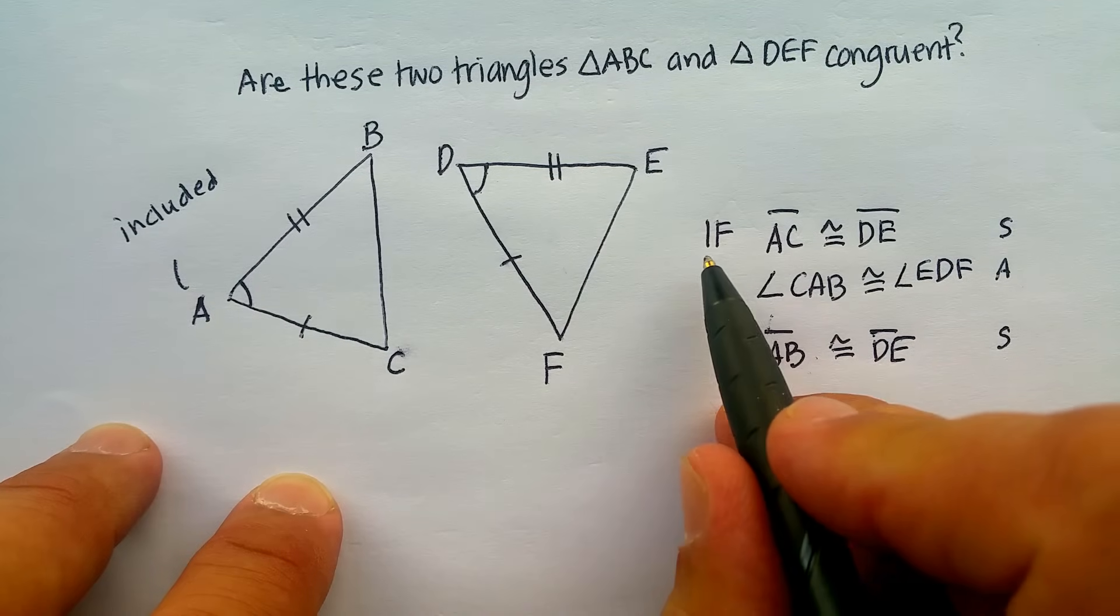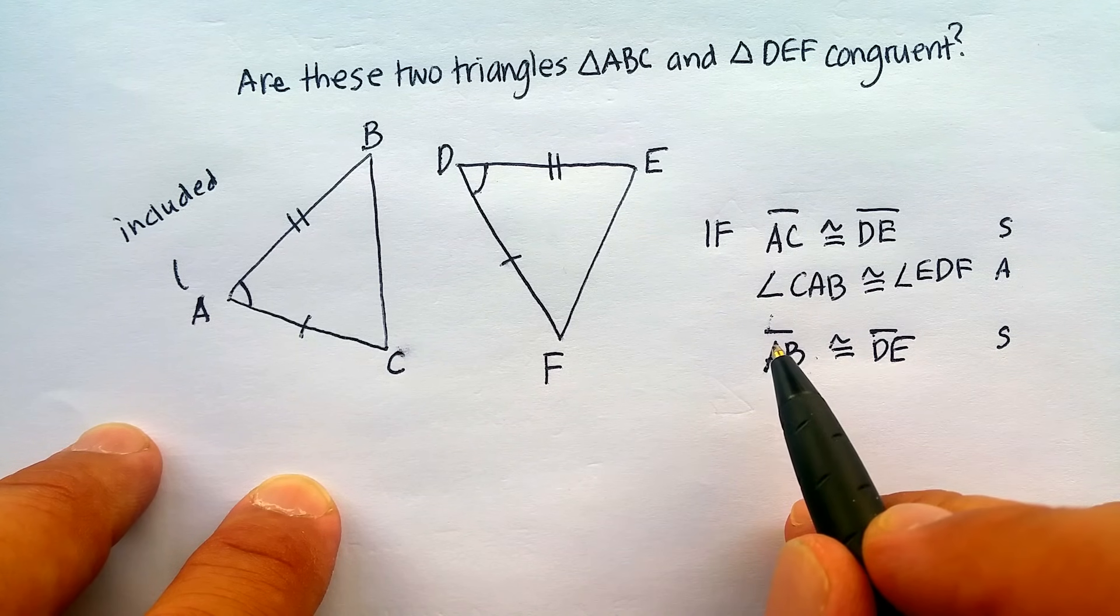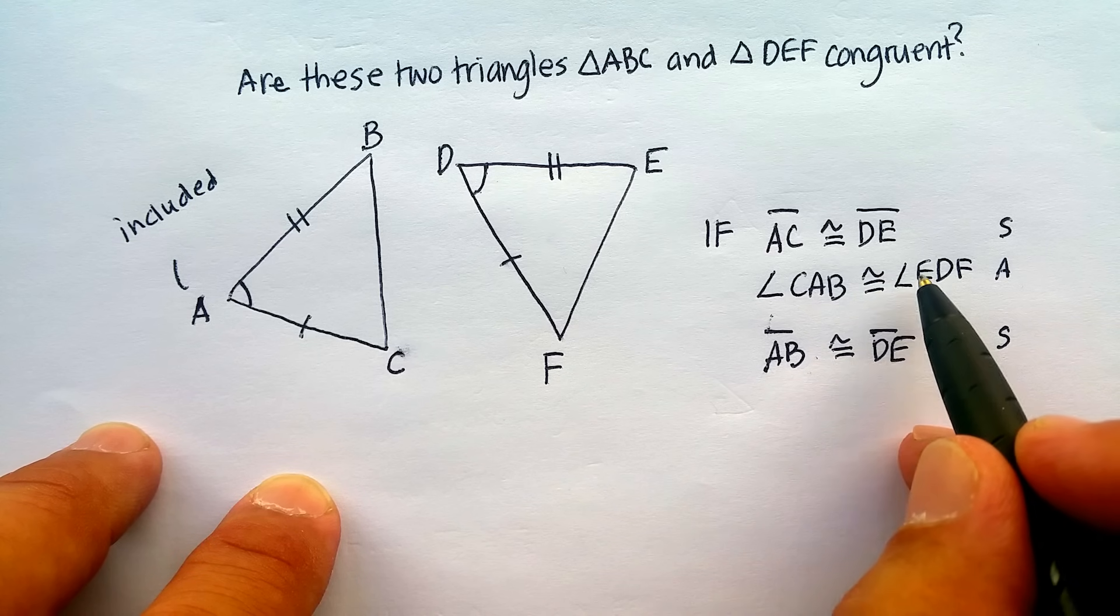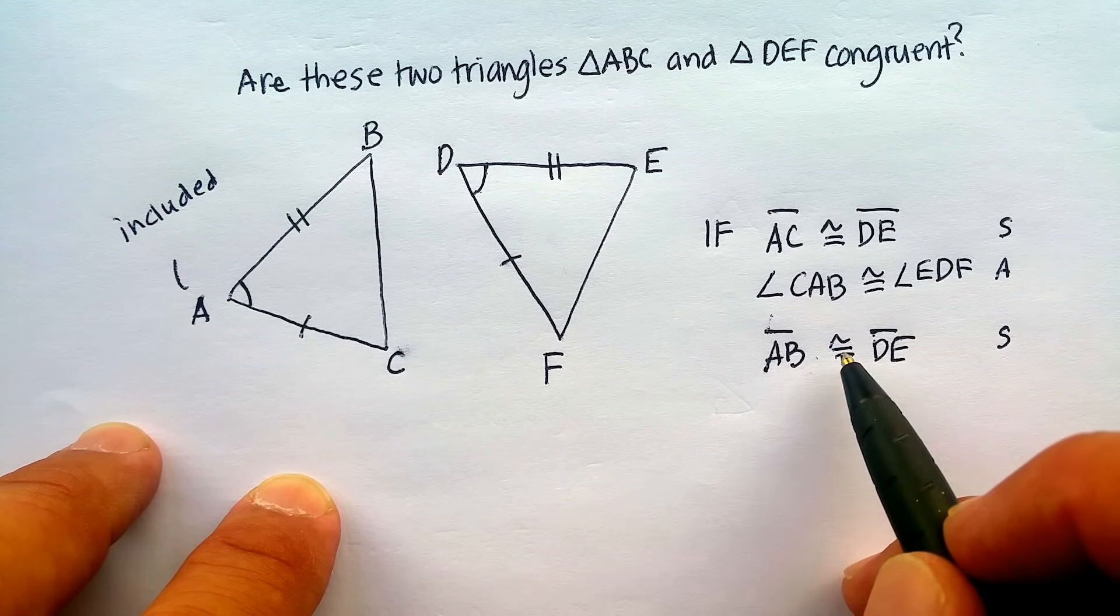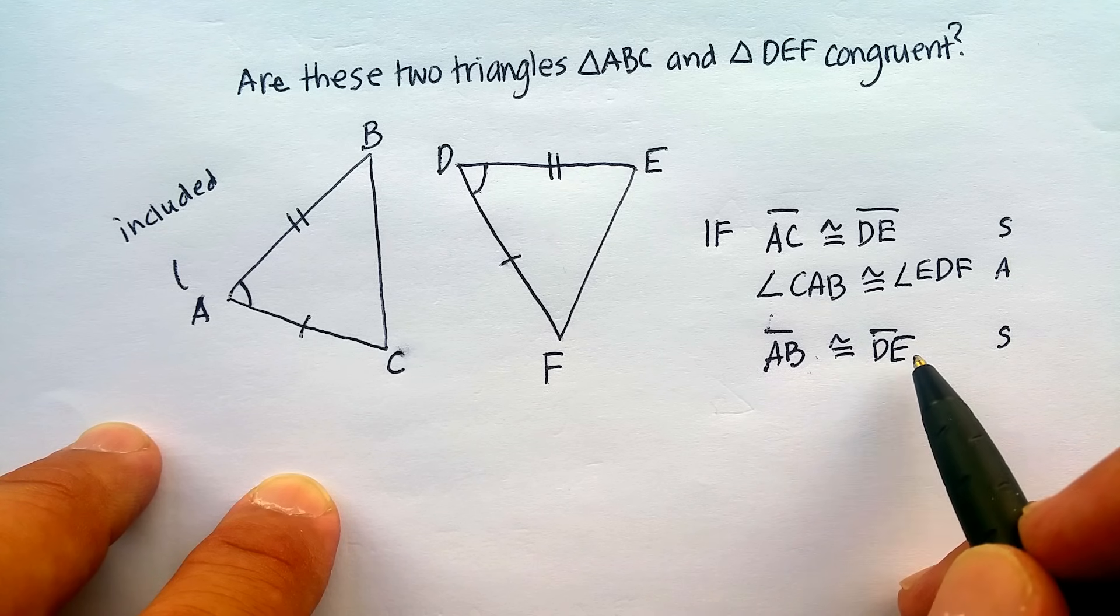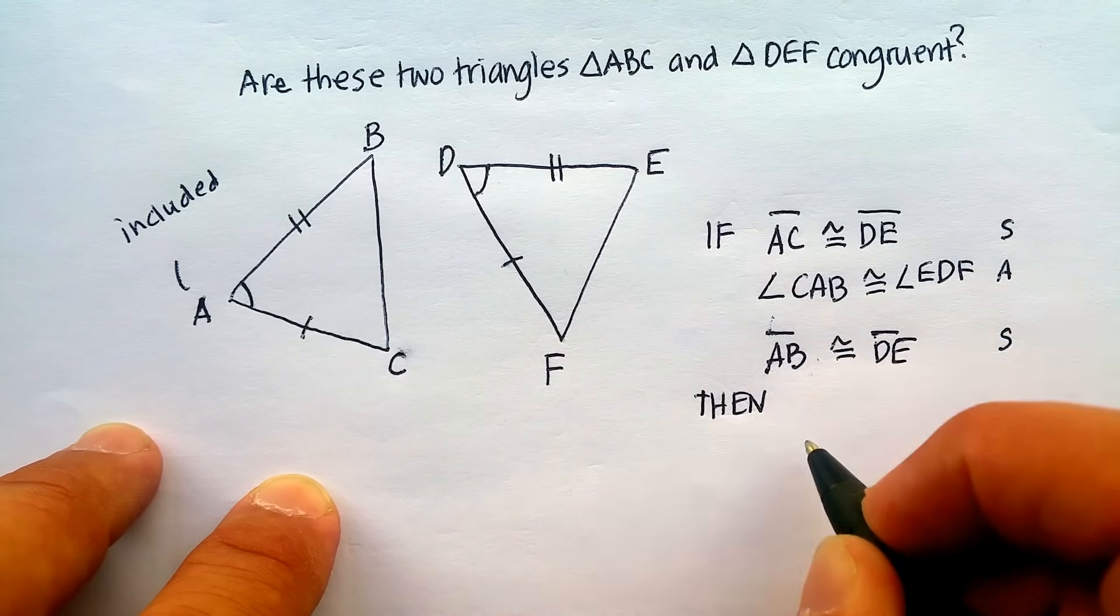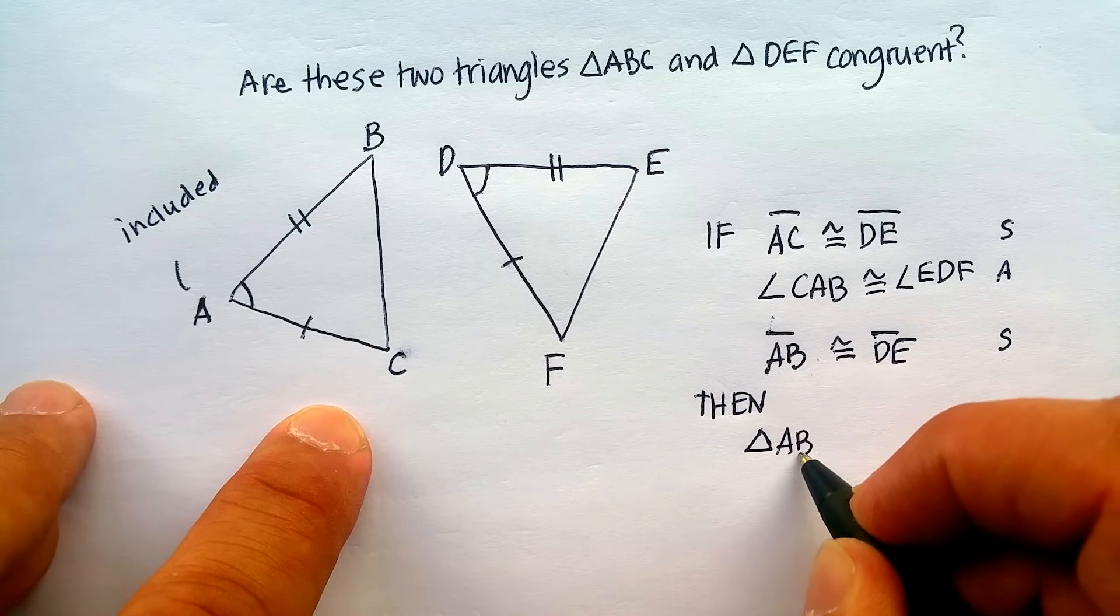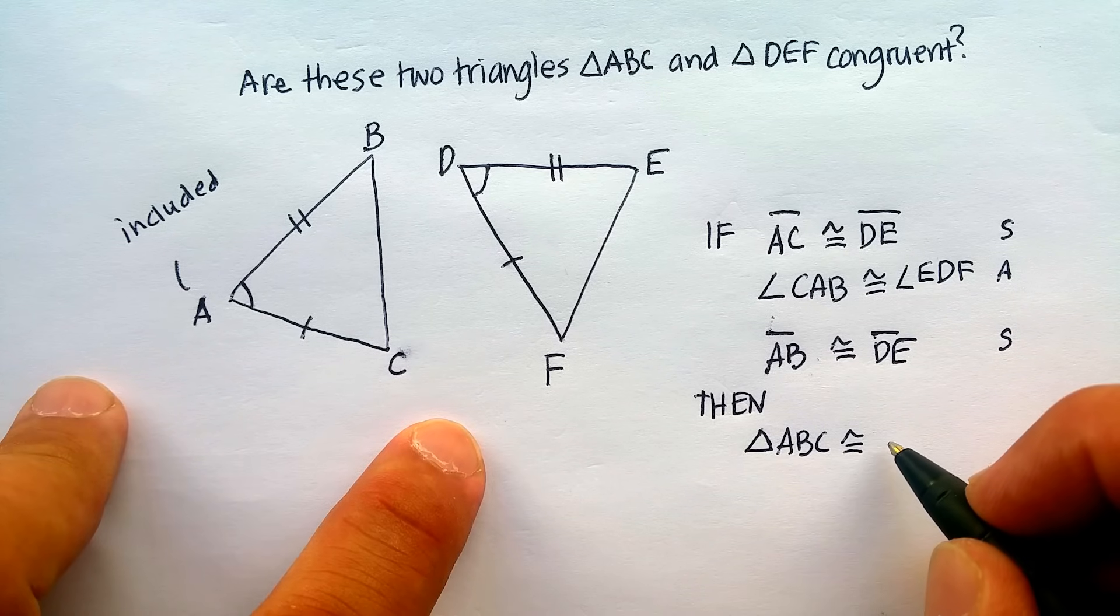So I could say if line segment AC is congruent to line segment DE, and angle CAB is congruent to angle EDF, and line segment AB is congruent to line segment DE. Then, triangle ABC is congruent to triangle DEF.